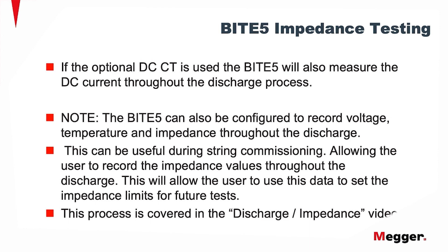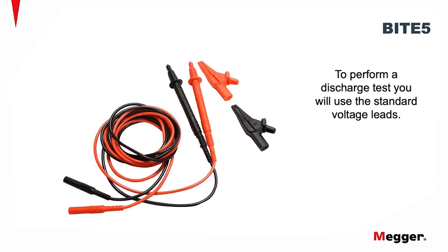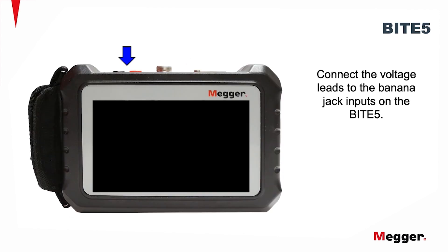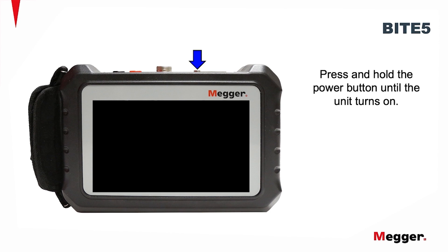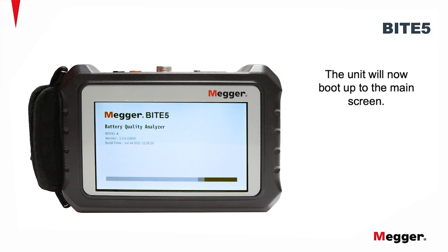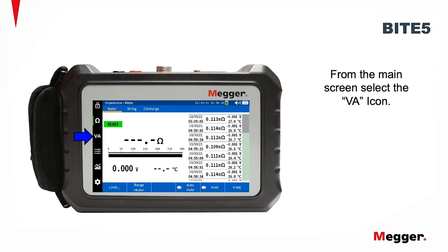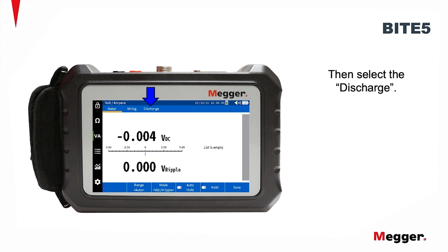This process is covered in the discharge test. To perform a discharge test, you'll use the standard voltage leads. Connect the voltage leads to the banana jack inputs on the Byte5. Press and hold the power button until the unit turns on. The unit will now boot up to the main screen. From the main screen, select the VA icon, then select Discharge.